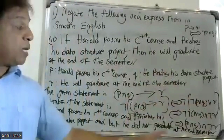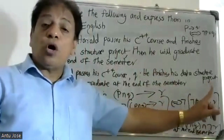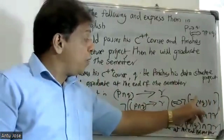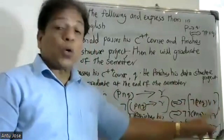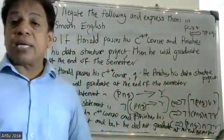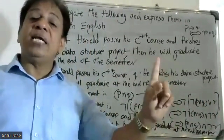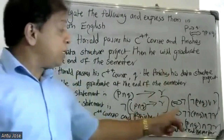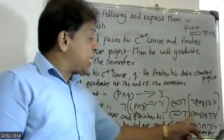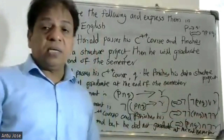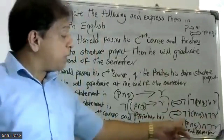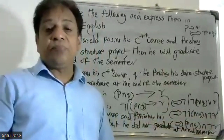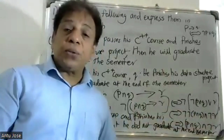Applying De Morgan's law: negation of P or Q becomes negation P and negation Q. Then applying double negation, negation of negation P and Q and negation R simplifies to P and Q and negation R.